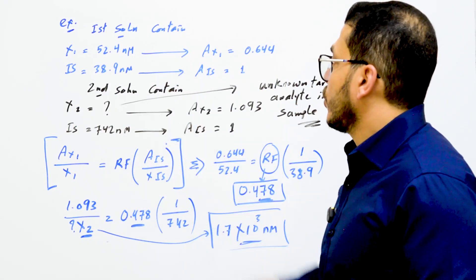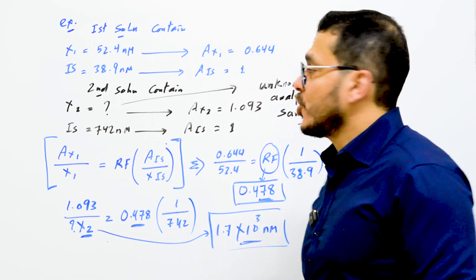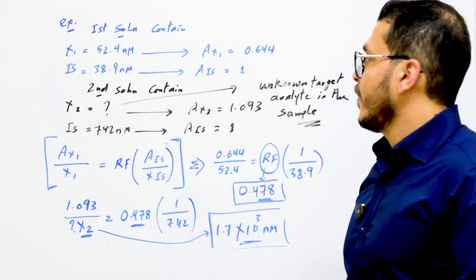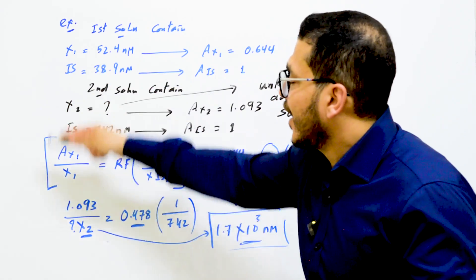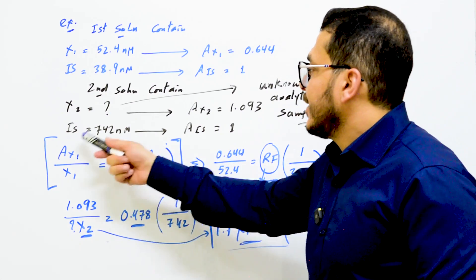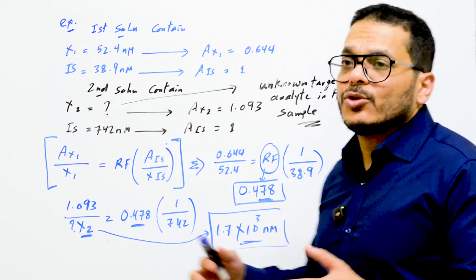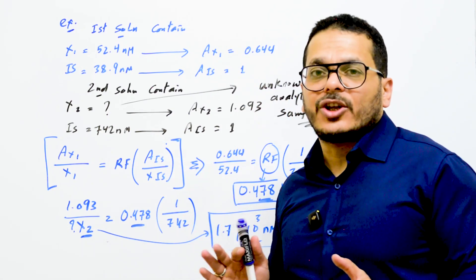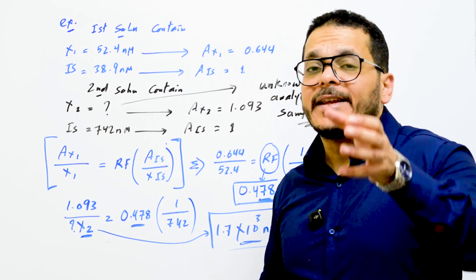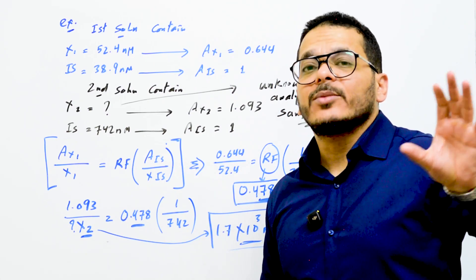Here is a worked example. The first solution contains a known concentration of analyte — 52.4 — and the area for this concentration was 0.644. The internal standard has a known concentration and an area equal to one. For the second solution, we have an unknown target analyte whose concentration we need to determine; the area was 1.093. Normally, the response is the area divided by the concentration, giving you the slope. But with an internal standard, it is the area of the analyte divided by the area of the internal standard, over the concentration of the analyte divided by the concentration of the internal standard.